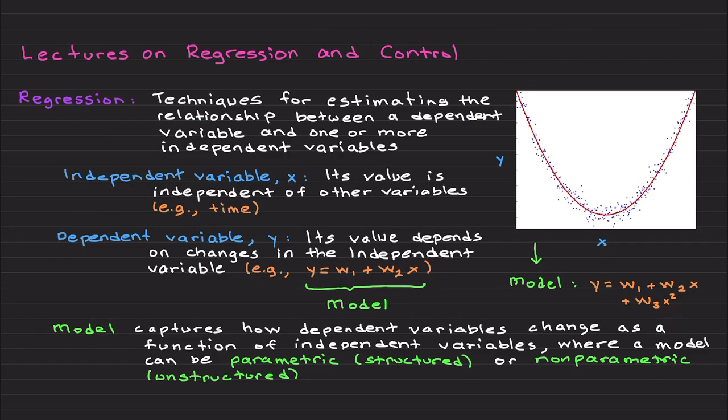So I can create a model like y equals to some bias multiplied by some weight multiplied by x and another weight multiplied by x to the power of 2. Then this represents the parametric model of this data, then this red curve is basically the curve fitting to this data we're going to talk.